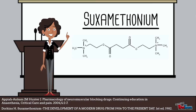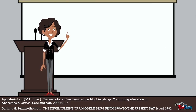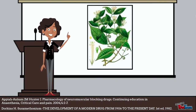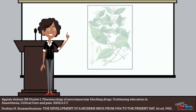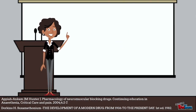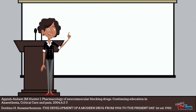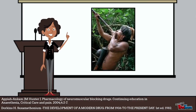Suxamethonium was developed from curare, which is mostly prepared by soaking the bark of a viney jungle plant called Strychnos toxifera to extract the active excipient. Curare is an arrow poison that was used by a tribe in Venezuela to paralyze wild animals when hunting.